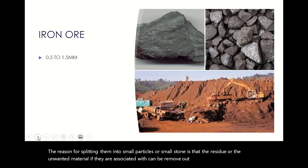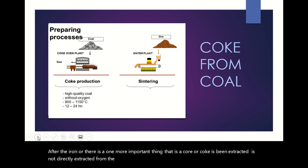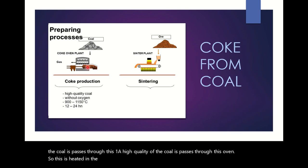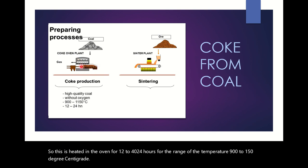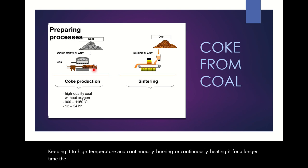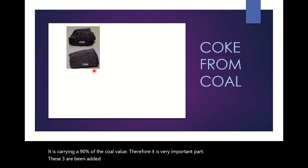After the iron ore, another important material is coke. Coke is not directly extracted from the earth — it is extracted from coal. As you can see in the diagram, high-quality coal passes through an oven where it is heated for 12 to 24 hours at a temperature range of 900 to 1500 degrees centigrade. By keeping it at high temperature and continuously heating it for a longer time, high-quality coal is extracted, and that is called coke. It carries 90% of the coal value, making it a very important part of the process.